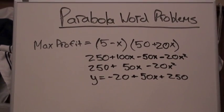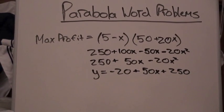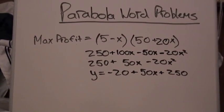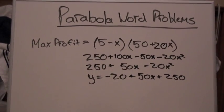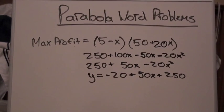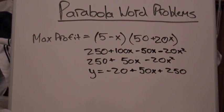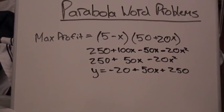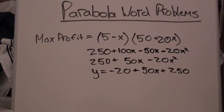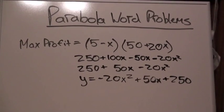We are now going to foil this problem out. Once you do that, you will get 250+100x-50x-20x². Once you reduce that down, it turns out to be 250+50x-20x².